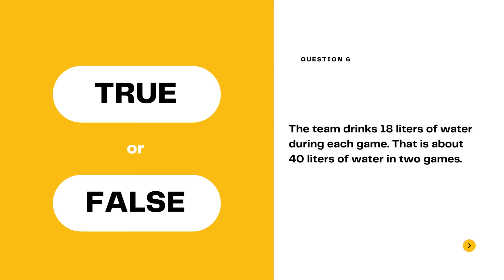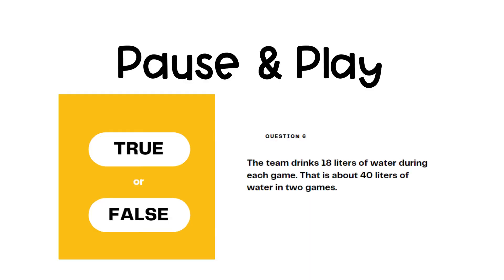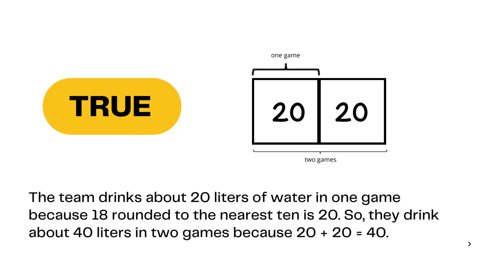Question 6, true or false: The team drinks 18 liters of water during each game. That is about 40 liters of water in two games. Pause here and press play when you have your answer ready. The answer is true. The team drinks about 20 liters in one game because 18 rounded to the nearest 10 is 20. So they drink about 40 liters in two games because 20 plus 20 equals 40.